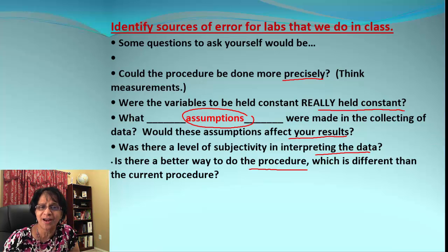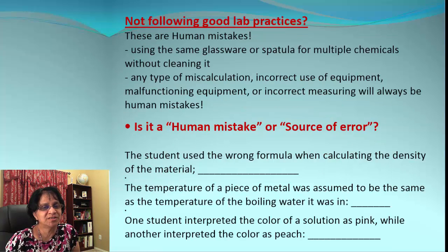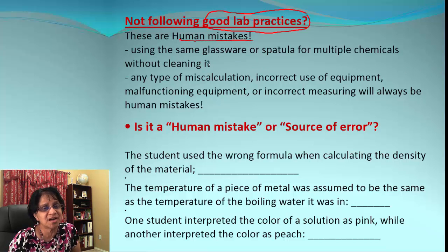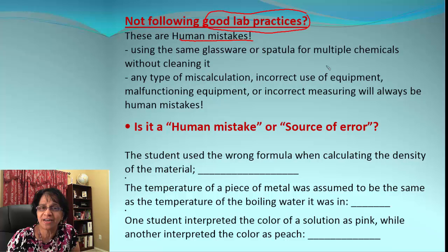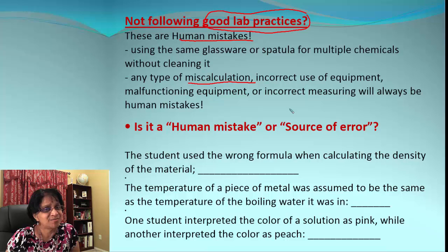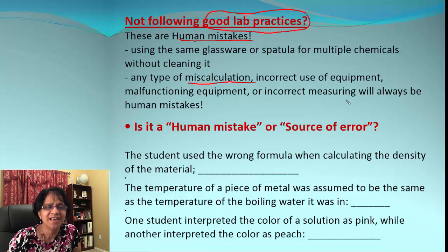This happens easily if we don't pay attention or follow good lab practices, resulting in human mistakes. Some examples: using the same dirty glassware or spatula for multiple chemicals without cleaning it — obviously we won't get a pure chemical. Also, using the wrong formula or calculating incorrectly. Using wrong or faulty equipment that may not be working well. And not measuring correctly.